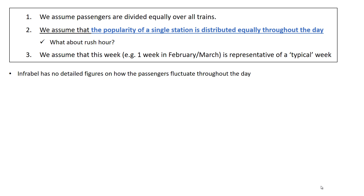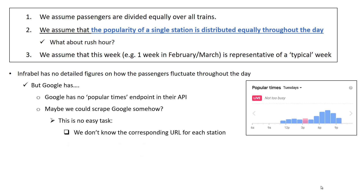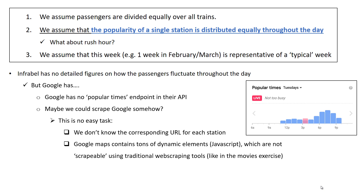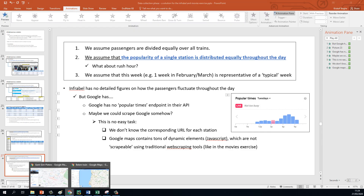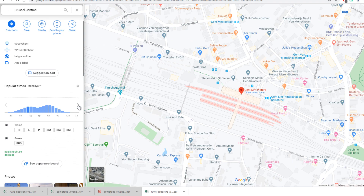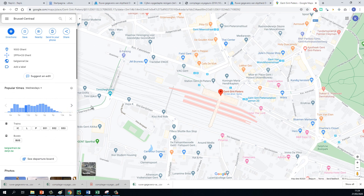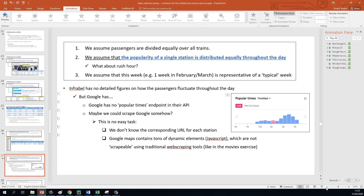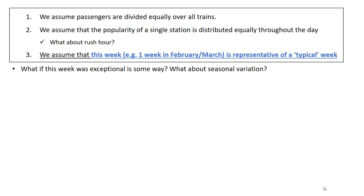It's also because Google Maps contains a lot of dynamic elements — JavaScript in their page — and these elements are not scrapable using traditional web scraping tools. So the popular times graphs are interactive elements that won't be present if you just load the HTML code immediately into your Python environment. So we need some other tool — but I'll talk about that later.